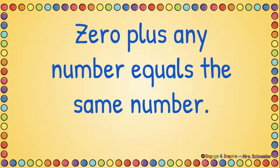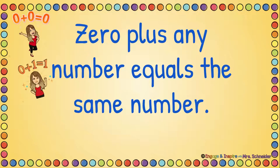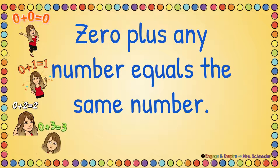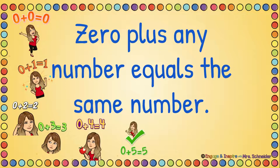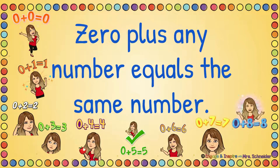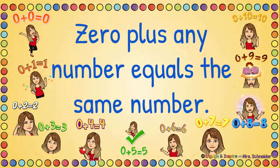0 plus any number equals the same number. 0 plus 0 is 0. 0 plus 1 is 1. 0 plus 2 is 2. 0 plus 3 is 3. 0 plus 4 is 4. 0 plus 5 is 5. 0 plus 6 is 6. 0 plus 7 is 7. 0 plus 8 is 8. 0 plus 9 is 9. And 0 plus 10 is 10.